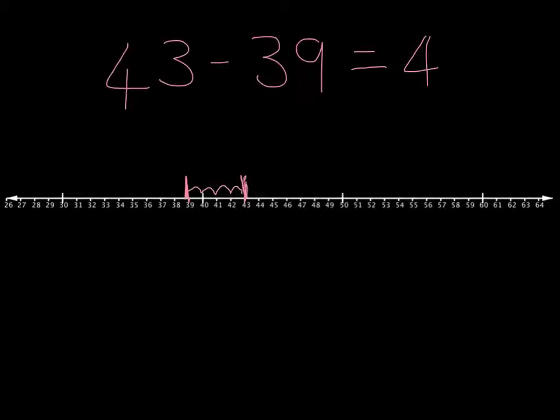So we have two different ways of thinking about subtraction and they help us for different kinds of calculations. One way we can think about subtraction is taking away, taking steps backwards and the other way we think about it as how far apart, what's the difference?